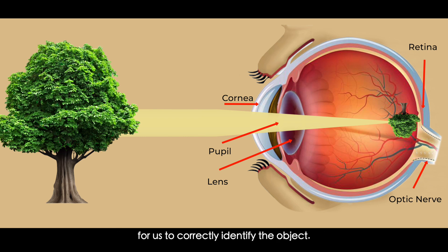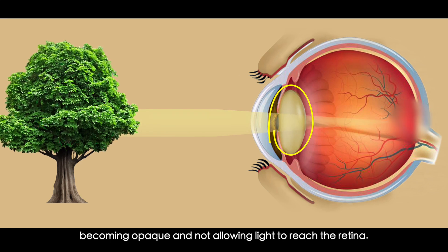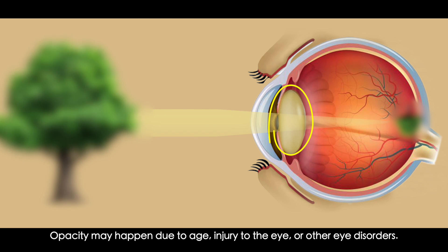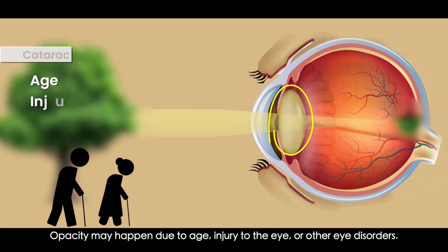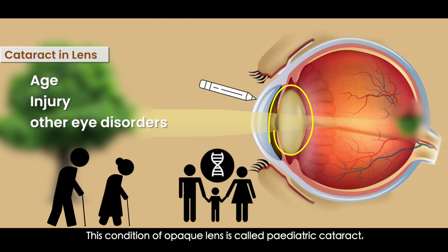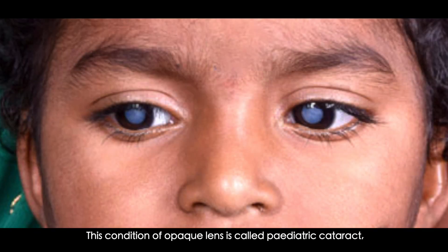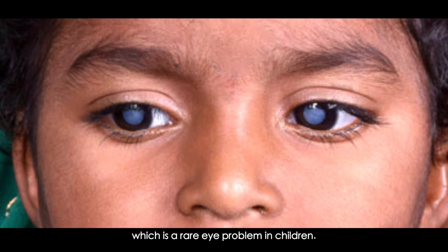To correctly identify the object, the lens inside the eye may lose its transparency, becoming opaque and not allowing light to reach the retina. Opacity may happen due to age, injury to the eye, or other eye disorders. This condition of an opaque lens is called pediatric cataract, which is a rare eye problem in children.